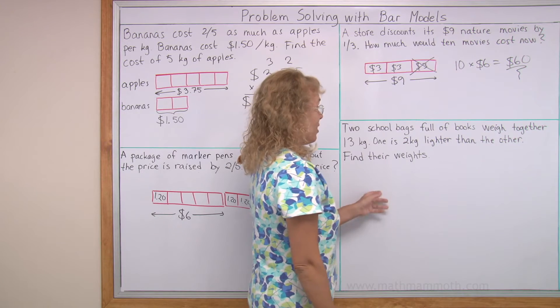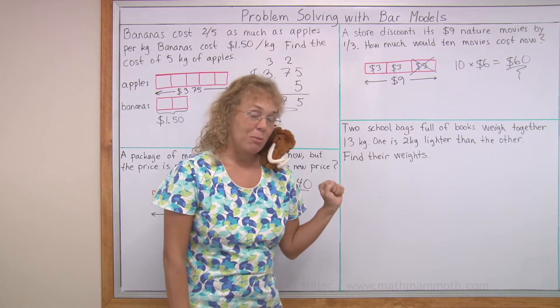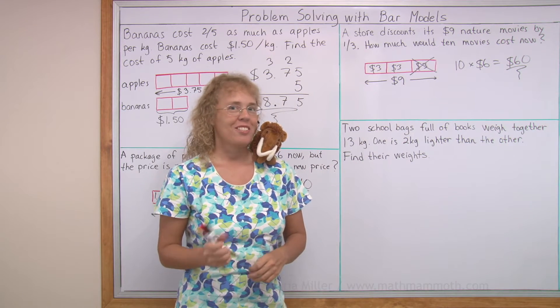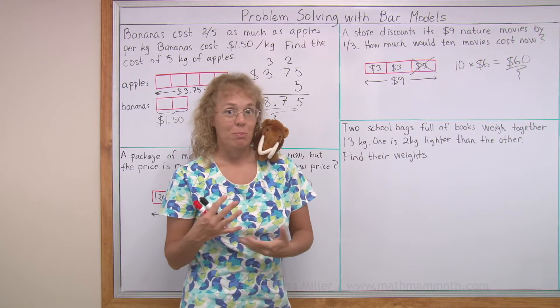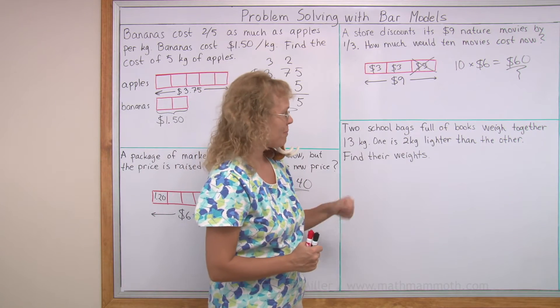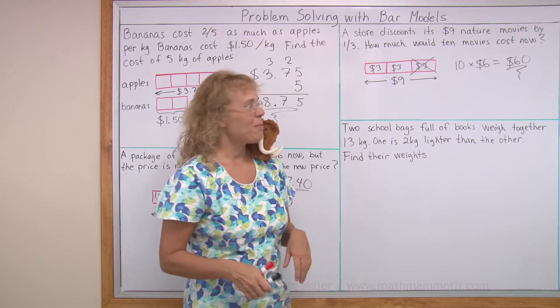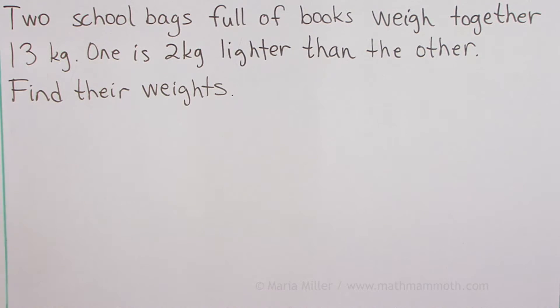Now this one, if you've never seen this kind of a problem before, it can be a little tricky. But we have a very special bar model to solve these types of problems, and it will make it easy. Two school bags full of books weigh together 13 kilograms, but they are not of equal weight. It says one is two kilograms lighter than the other. Find their weights.